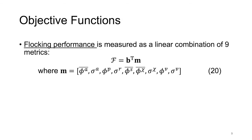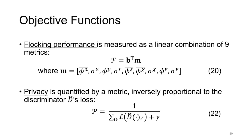In our work, we implement the following objective functions. Flocking performance is measured as a linear combination of nine metrics, and privacy is quantified by a metric which is inversely proportional to a convolutional neural network discriminator's classification loss.